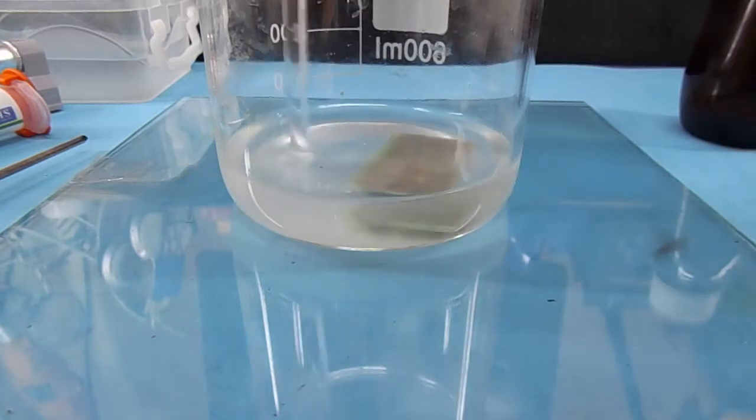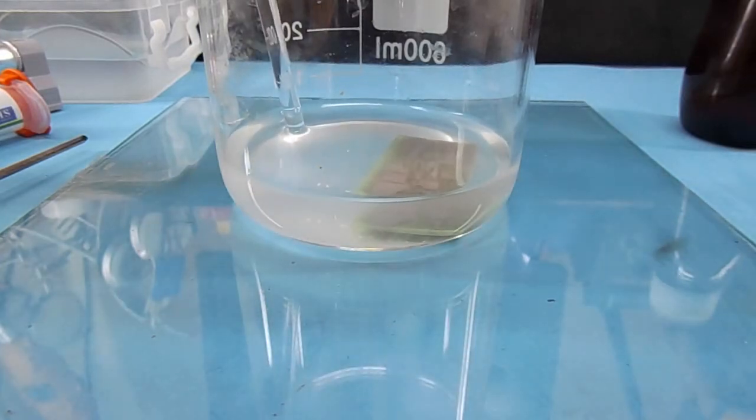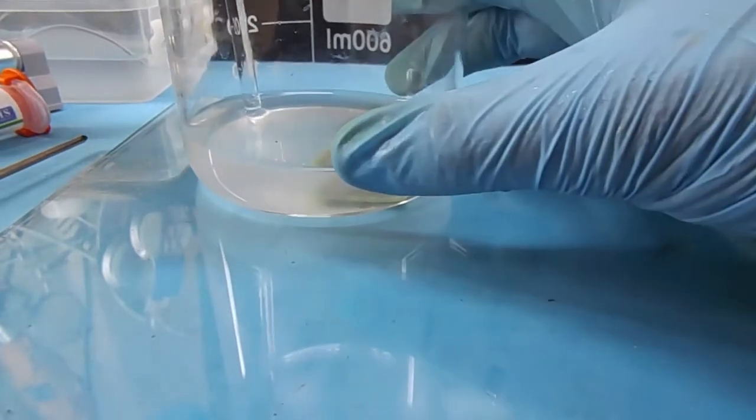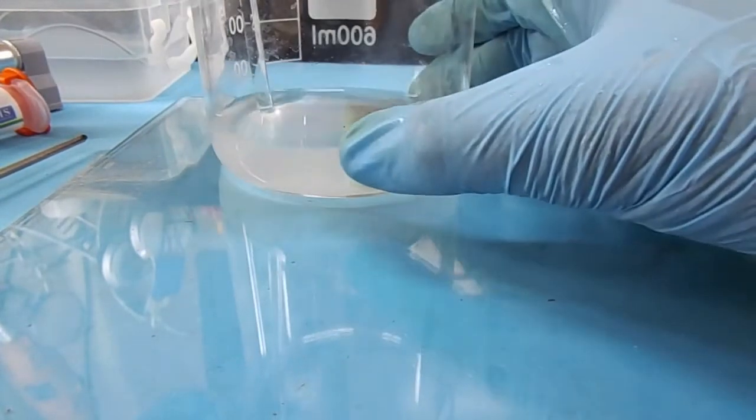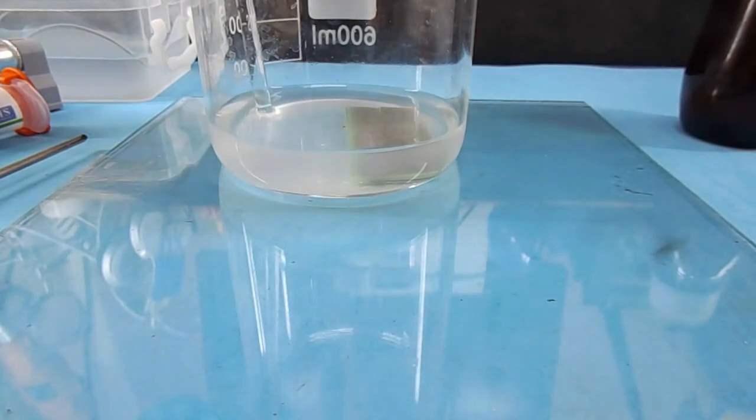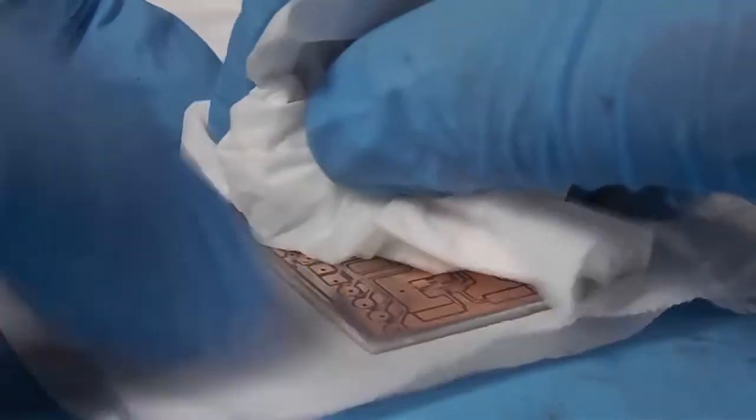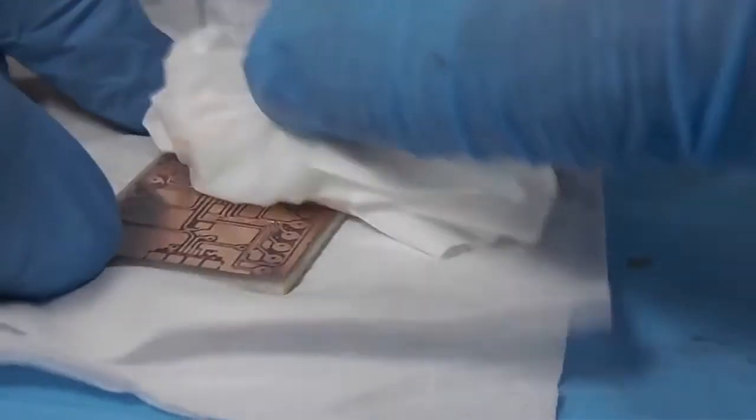First I would like to tin the whole PCB by immersing the PCB inside the tinning solution for a minute. And actually I do this before applying solder mask, because it's easier to clean the PCB while nothing is sticking on the board. Now let's move to solder mask.